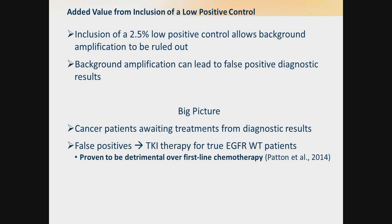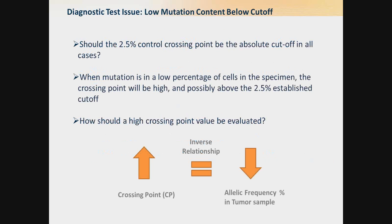We can clearly see the value added from inclusion of this control. But now I'd like to discuss whether this should be used as an absolute cutoff value in all cases. When a mutation is in a low percentage of cells in a specimen, the crossing point value will be high and possibly above the established 2.5% cutoff. So how should these be evaluated?